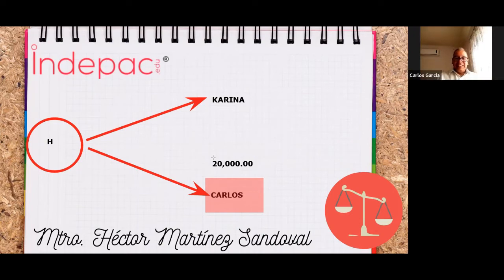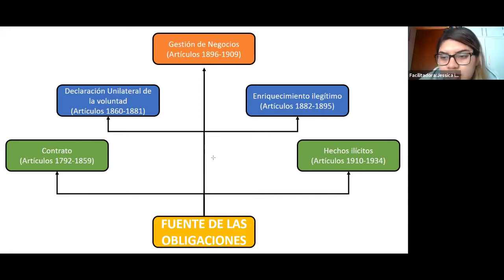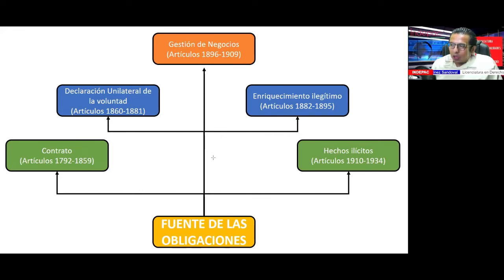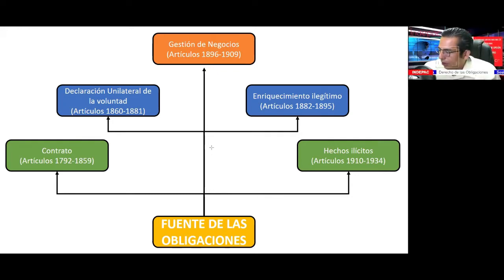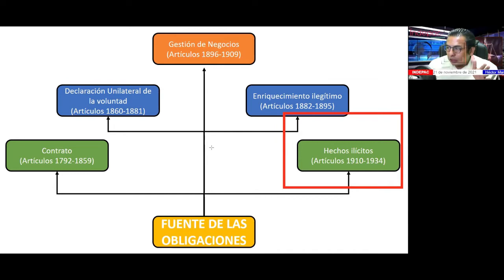Siguiente punto: los contratos conmutativos son aquellos en que las prestaciones que se deben las partes son ciertas desde el momento en que se celebra el acto jurídico. Los contratos aleatorios serían los de juego, apuesta y compraventa de esperanza.